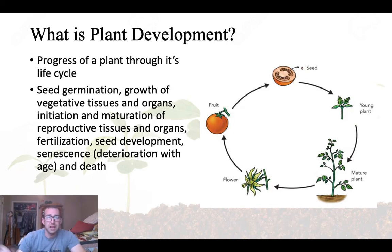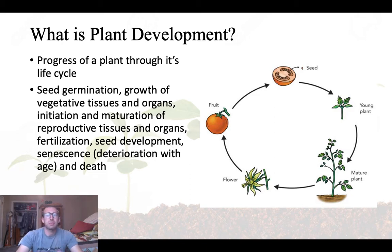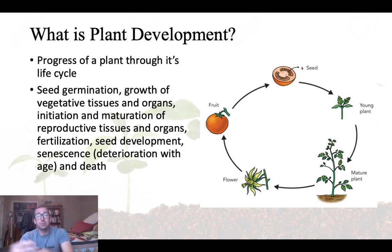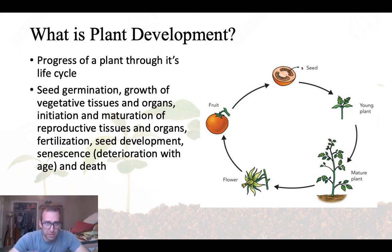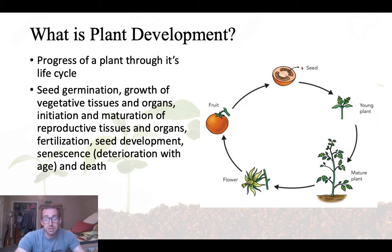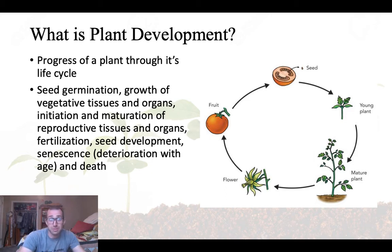Plant development is the progress of a plant through its life cycle. Think about it all the way from a seed to germination to where it's a young, immature plant. It goes through a process called phase change, which is like puberty for a plant. It becomes a mature plant, marked by being able to reproduce. The ultimate end of that life cycle is senescence, which is deterioration with age and eventually death.